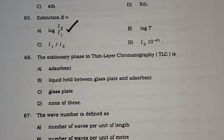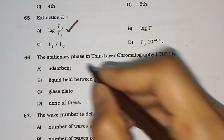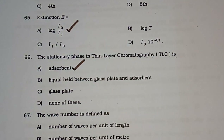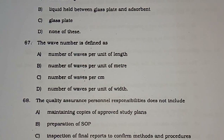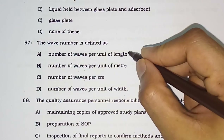Question number 66: The stationary phase in thin layer chromatography (TLC) is — adsorbent, liquid held between glass plate and absorbent, adsorbent glass plate, or none of these. The correct answer is adsorbent. Question number 67: The wave number is defined as — the number of waves per unit length, per meter, per centimeter, or per unit width. The correct answer is waves per unit length.